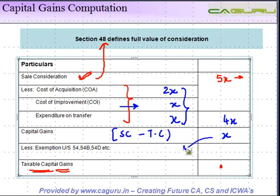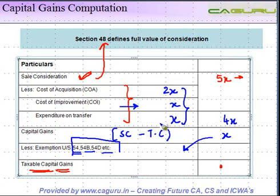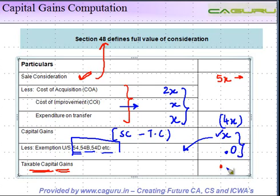Out of this capital gain, in some cases dealt with under Section 54, capital gains are exempt. For example, when you sell a residential house property and purchase another residential house property, the capital gains arising on sale of the first one are exempt from tax subject to certain conditions. If some capital gain is exempt, it is marked here; if not, it is zero. Taxable capital gains are computed by reducing the exemptions from the capital gain.